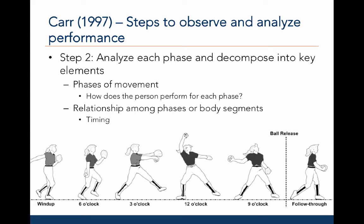The second step involves analyzing each phase of the movement and decomposing the movement into its key elements. For example, what are the phases of the movement? How does the person perform during each phase? It is also important to examine the timing of these phases or the timing of different body segments in the kinetic chain. In the figure at the bottom, the phases of a windmill pitch in softball are decomposed into six parts, and one can compare an individual's movements with respect to these different phases.